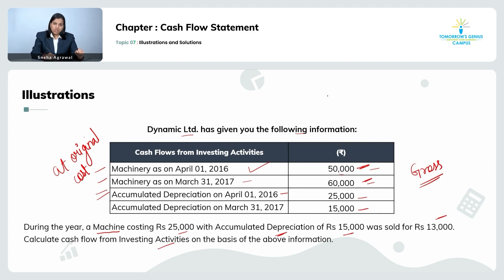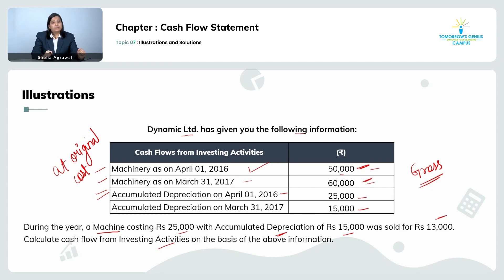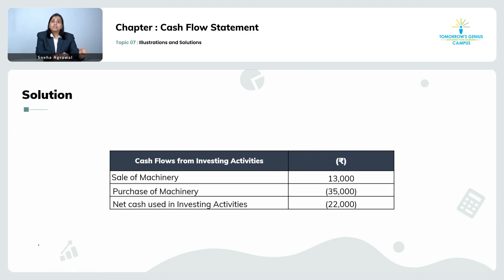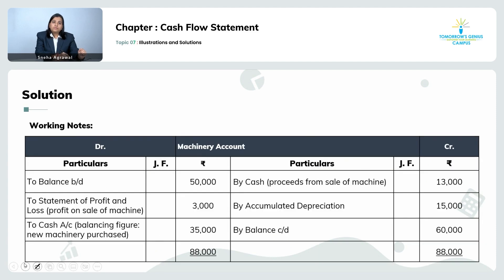We have understood the question: we are required to prepare the machinery account and the accumulated depreciation account. We need to prepare it because we need to know the profit or loss, any balancing figure, and from the accumulated depreciation account, what is the current year depreciation — since we are maintaining the machinery account on original cost, depreciation is not charged in the machinery account; it is charged in the accumulated depreciation account.